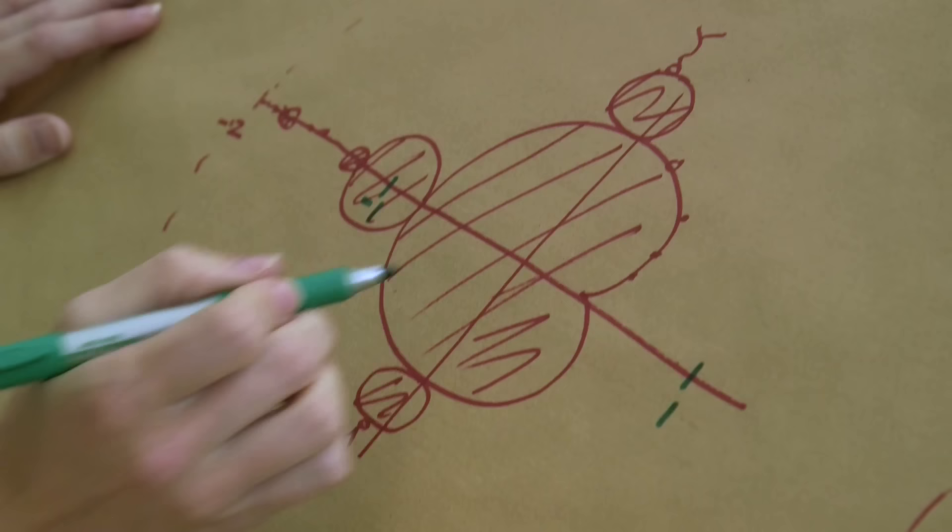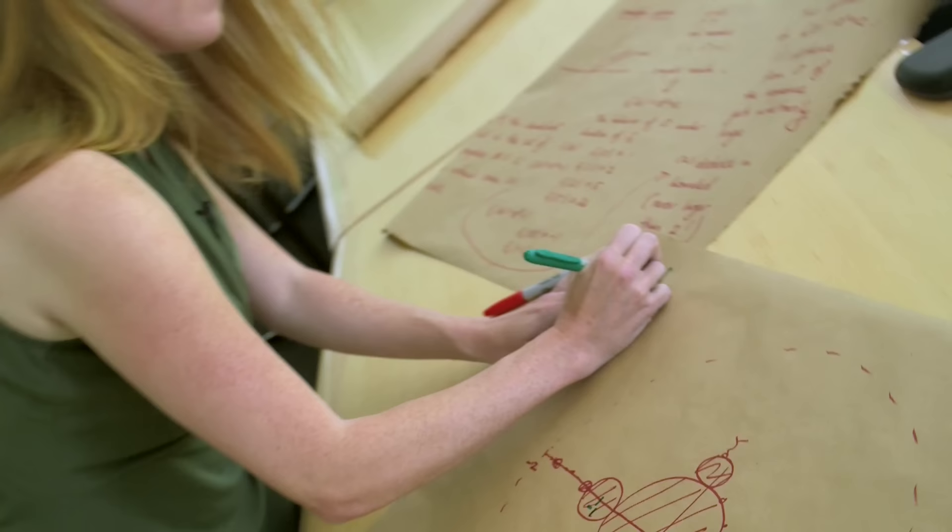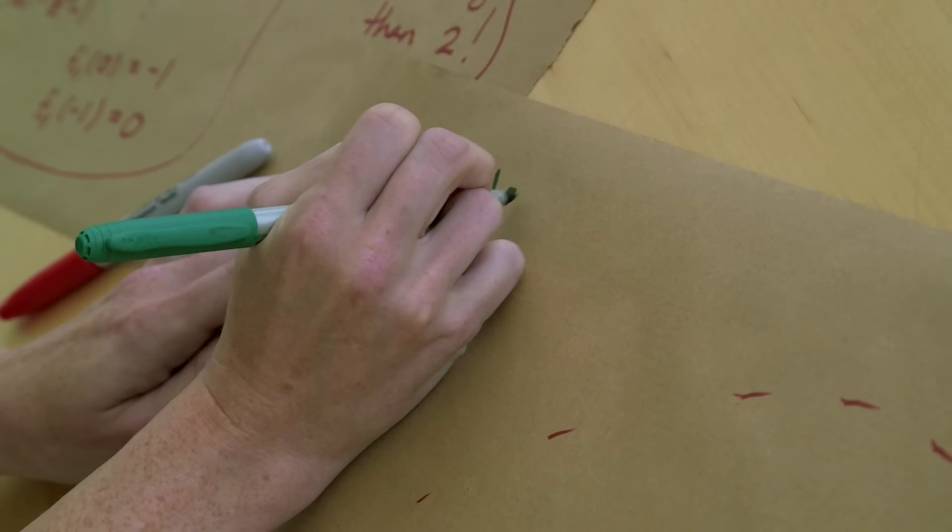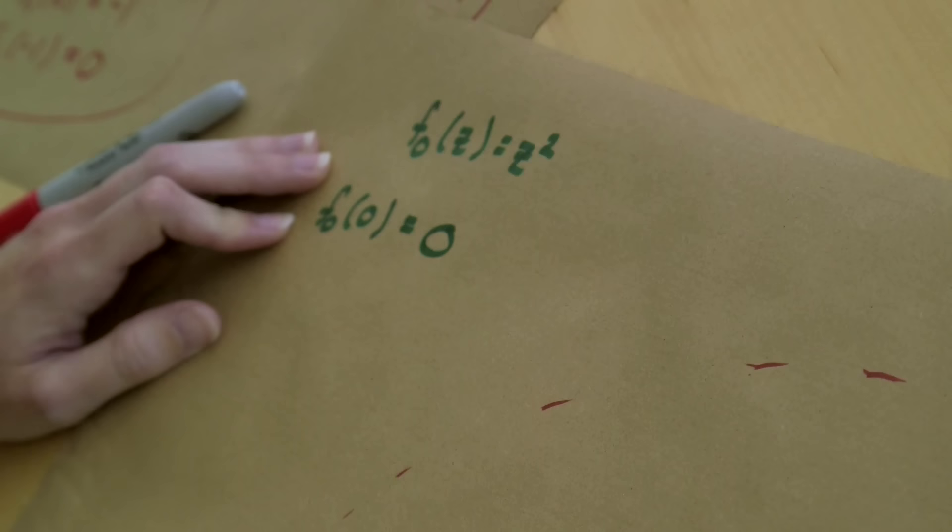Minus one is right here and is indeed inside the Mandelbrot set. One is right here and it's outside. Let me take the easiest example inside of there. If we look at zero, C equals zero, and we start iterating, well what is the function associated to C equals zero? F zero of z is z squared.